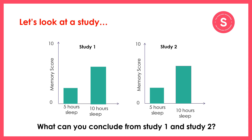What the bar chart is showing us is the mean memory score for individuals in the five hour sleep group and in the ten hour sleep group across both studies. Looking at these bar charts, what do you think you can conclude from study one and study two? Pause the video for a moment and think about what this data is telling us.